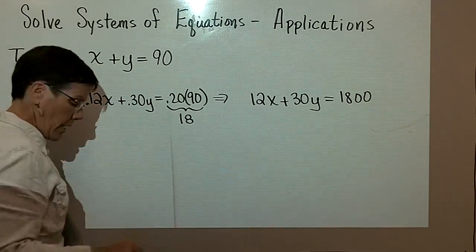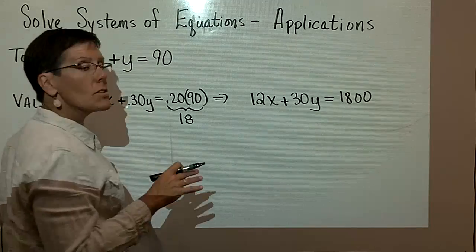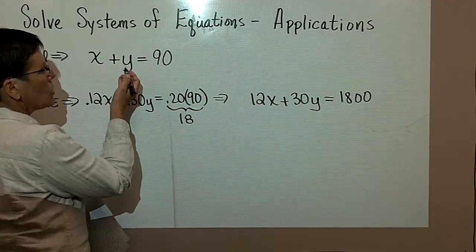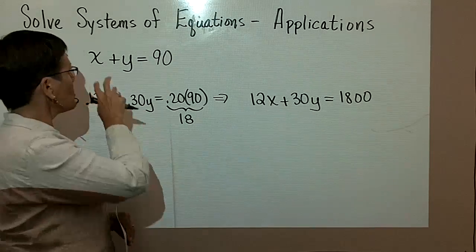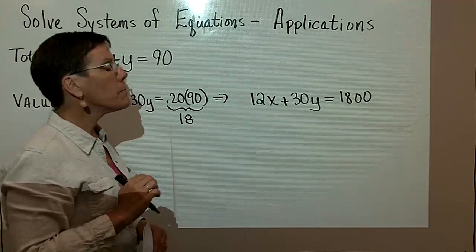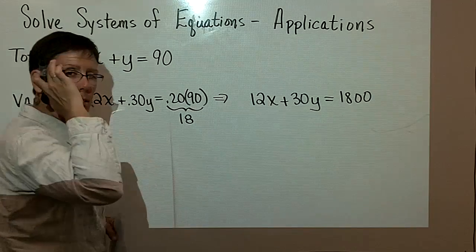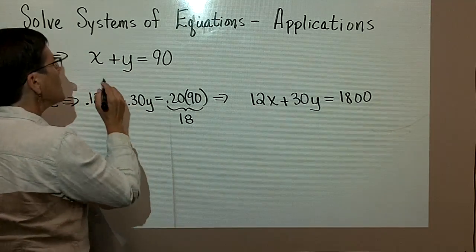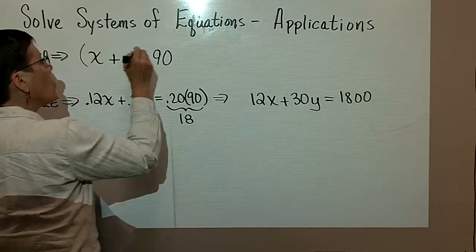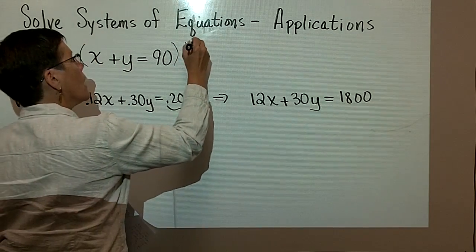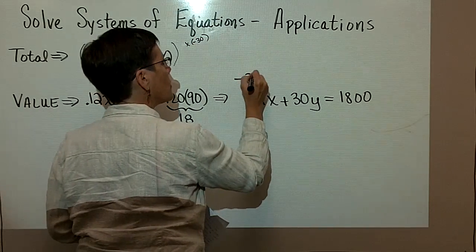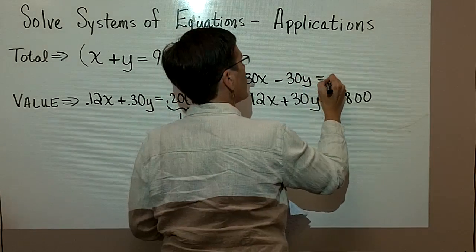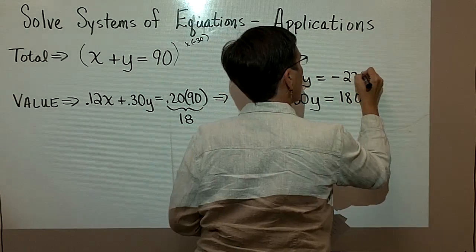You could also take this top equation and solve this one by elimination instead of substitution. Another thing that would be pretty easy for me to do in my head, I can multiply by 30 in my head pretty easy. So I'm going to multiply this whole statement by negative 30. So I'll have negative 30x, minus 30y, and negative 2700.